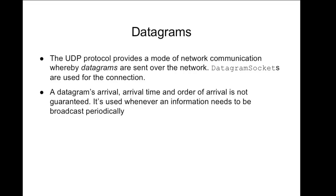Earlier when I talked about TCP, I also mentioned UDP or datagrams. UDP provides a mode of network communication whereby datagrams are sent over the network. A DatagramSocket is used for this connection — instead of a generic TCP socket, we talk about datagrams. UDP is a datagram protocol, and a datagram is nothing more than a packet — a bit of information, kind of like an email message but not to be confused with email. You can use UDP in Java as well. The datagram has an arrival time and arrival order, but arrival is not guaranteed — it's unreliable with no constant connection.